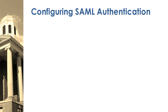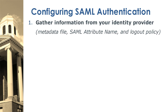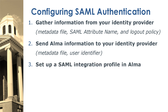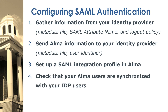To configure SAML settings for single sign-on and optionally a single sign-out between Alma and your IDP: gather information from your identity provider, send the Alma information to your identity provider, set up a SAML integration profile in Alma, check that your Alma users are synchronized with your IDP users, and start using it.